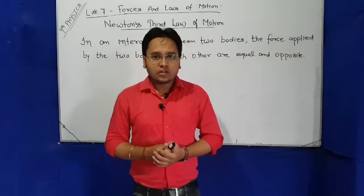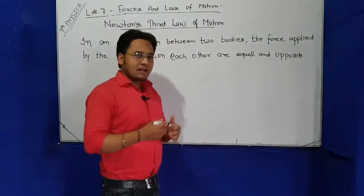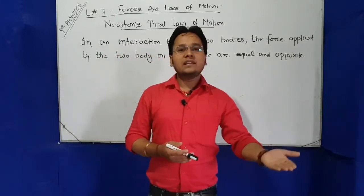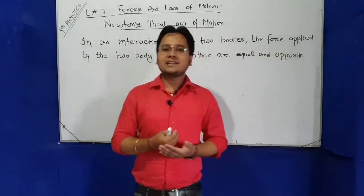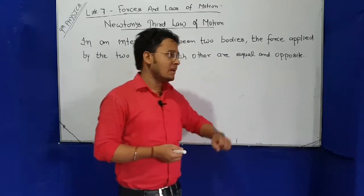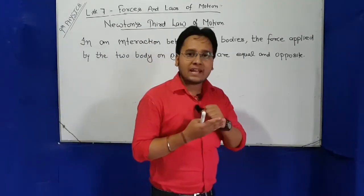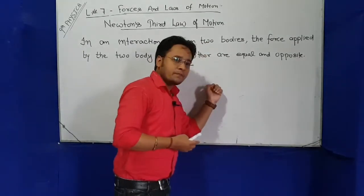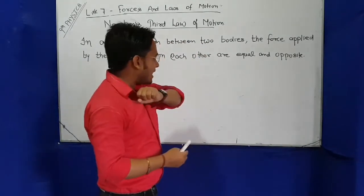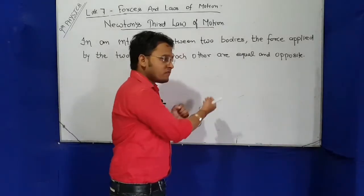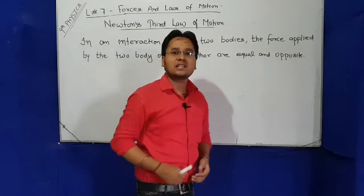Now understand the meaning of this. Third law says that if we put a force on a body, then the body applies equal but opposite direction force back. For example, if I hit the board with 10 Newtons force in this direction, then the board applies force on my hand in the opposite direction. That means in the opposite direction on the two bodies.